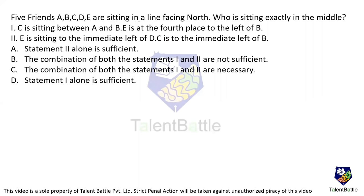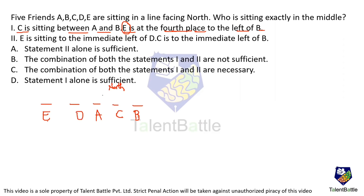Five friends A, B, C, D, E are sitting in a line facing north. Who is exactly in the middle? Statement one says: C is between A and B; E is at the fourth place to the left of B. Since E is fourth to the left of B, B must be at position 5 and E at position 1. C is between A and B, so C is at position 4 and A at position 3. D fills the remaining position 2. Therefore A is in the middle — statement one alone is sufficient.